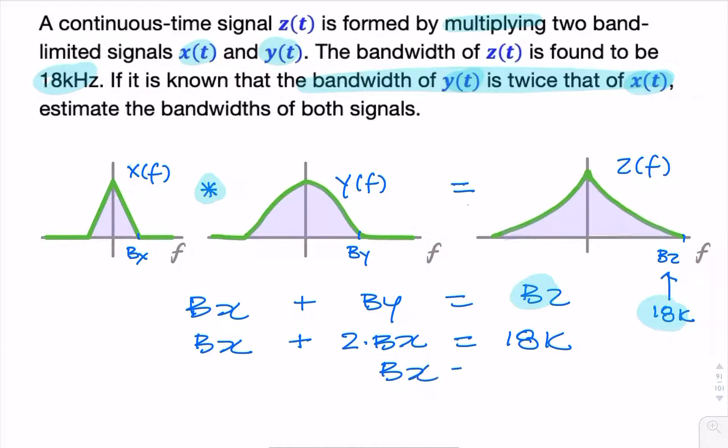We can say, well, bx, in that case, has to be 6kHz. And therefore, by is twice that, which is 12kHz. And 12 plus 6 equals 18.